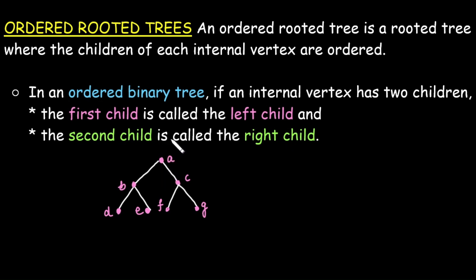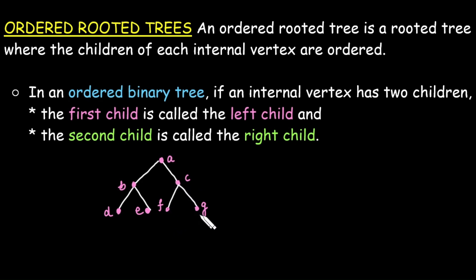For example, in the given ordered binary tree, vertex A has 2 children. The first child is called the left child — so B is the left child of A, and C is the right child. Similarly, D is the left child of B and E is the right child of B. F is the left child of C and G is the right child of C.